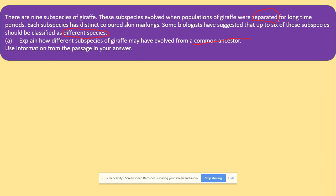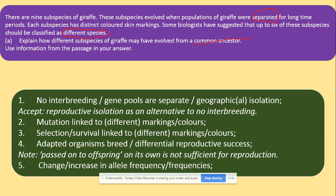The word 'separate' tells you they are no longer able to interbreed, indicating geographical isolation. Geographical isolation stops them from interbreeding. The only way of getting genetic diversity in different isolated species is mutation, which is then passed from generation to generation, increasing allele frequency. In terms of the mark scheme: no interbreeding because they are separated due to geographical isolation; mutation is linked to the different color markings; and selection is linked to why they evolved.